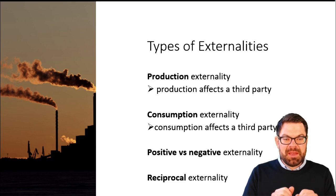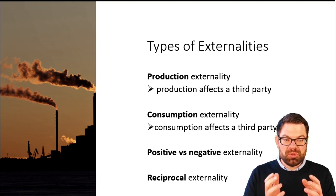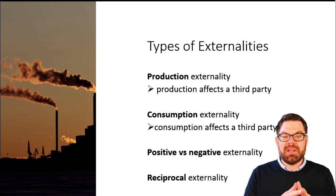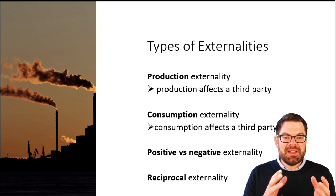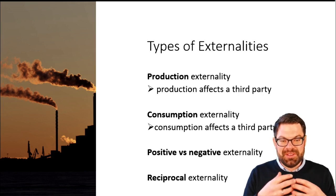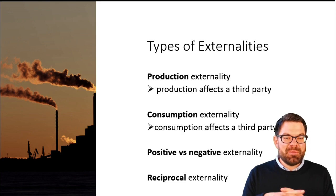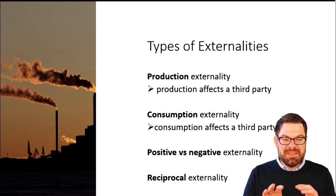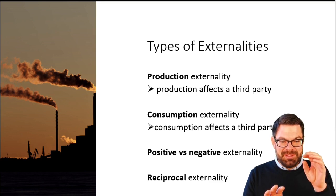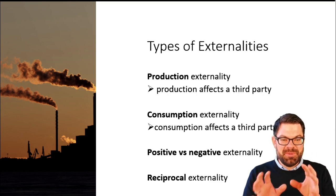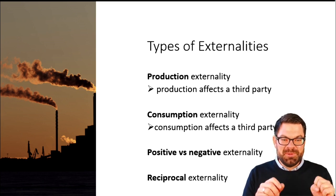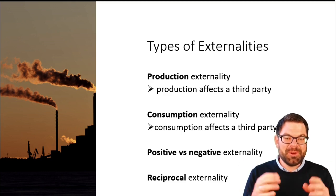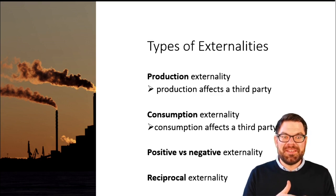There is also a specific type of externality that is reciprocal. A reciprocal externality is typically a positive externality between two parties that is mutual. The classic textbook example is a beekeeper and the owner of an orchard. If their businesses are close to one another, the bees need the pollen, and the trees to bear fruit also need to be pollinated. What we get from that reciprocal externality is honey and fruit that we would otherwise not as easily get.